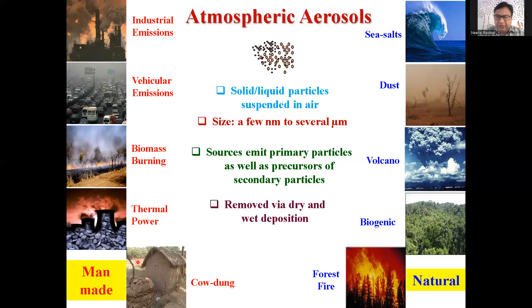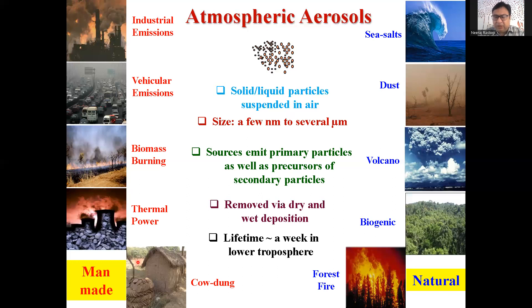Ultimately, aerosols get removed from the atmosphere by dry or wet deposition. Dry deposition means falling down under gravity. Wet deposition means with rain or snow they come down to the surface. The lifetime of aerosols in the lower troposphere is just about a week — only a week. So you might think it is just for a week, why are we worrying so much? We will talk about that.